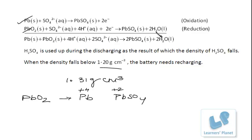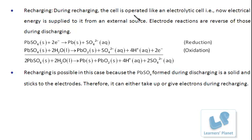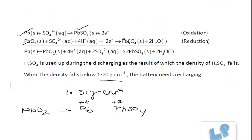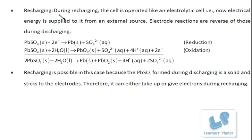Now let's see the recharging reaction. During recharging, the cell is operated like an electrolytic cell — electrical energy is supplied from an external source. The electrode reactions are the reverse of those during discharging. During discharging, lots of lead sulfate was formed; during recharging, this lead sulfate will break up. The recharging reactions are the reverse of the discharging reactions.